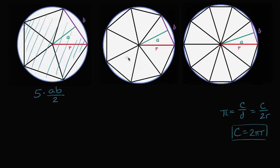But as we add more sides to the polygon, we see that we're leaving out less. With a seven-sided polygon, we're leaving a little bit less — we're still underestimating, but by less. This area that we're giving up isn't as large. So in this approximation with seven triangles, the area of each triangle is ab over two, making the total seven times ab over two.